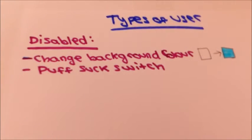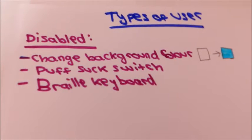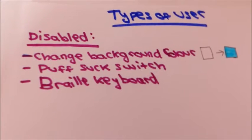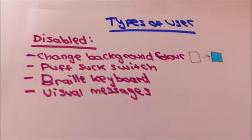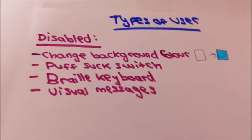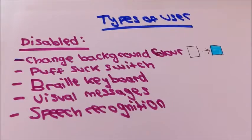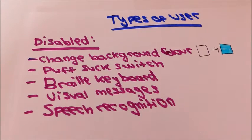The use of specialist input devices such as those which use blowpipes to activate the computer can be used by anyone with limited physical mobility. Braille keyboards can be used to allow a visually impaired person to enter text into the computer. Visual messages can be used for those who are hard of hearing so that they know what they have entered is correct. Speech recognition rather than keyboards for users who cannot use a keyboard or a mouse.